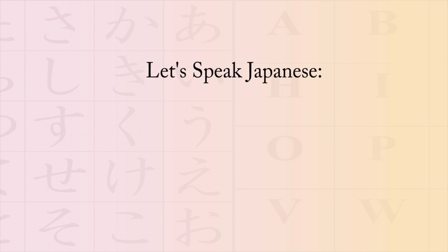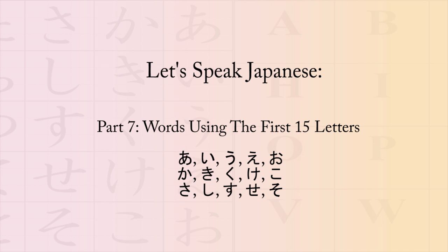Hello everyone and welcome to part 7 of our series in conversational Japanese. In this video I would like to cover some example words that use letters from the first three columns of the Japanese alphabet — the letters a, i, u, e, o; ka, ki, ku, ke, ko; and sa, shi, su, se, so. Like the previous videos, we will only cover a few example words, mostly focused towards understanding the pronunciation of the language rather than vocabulary.